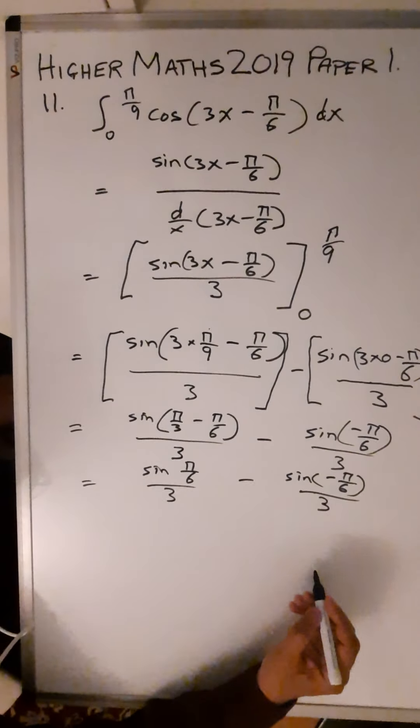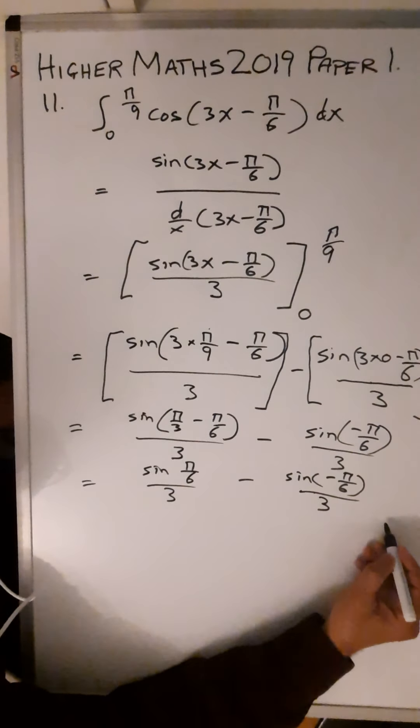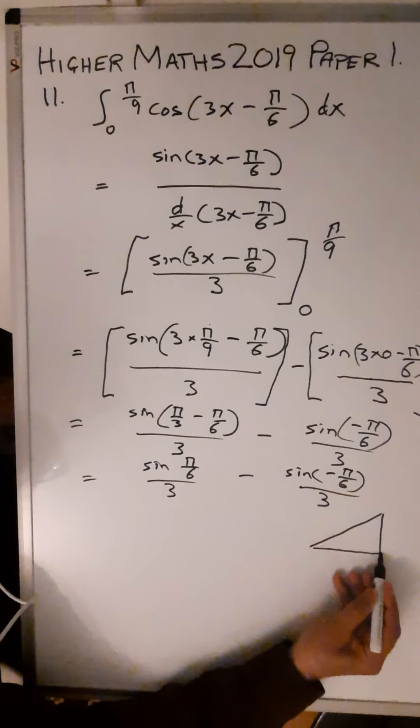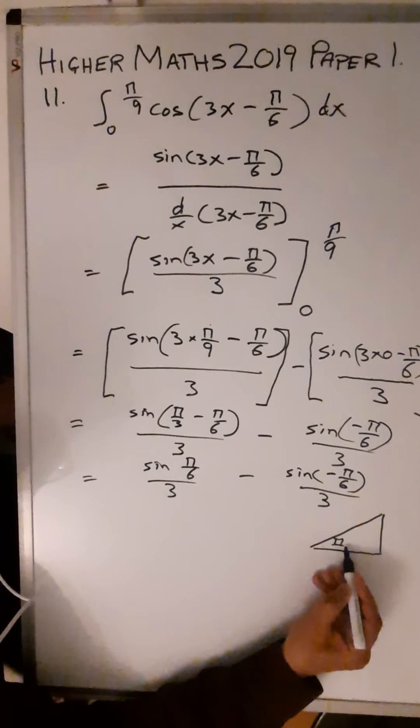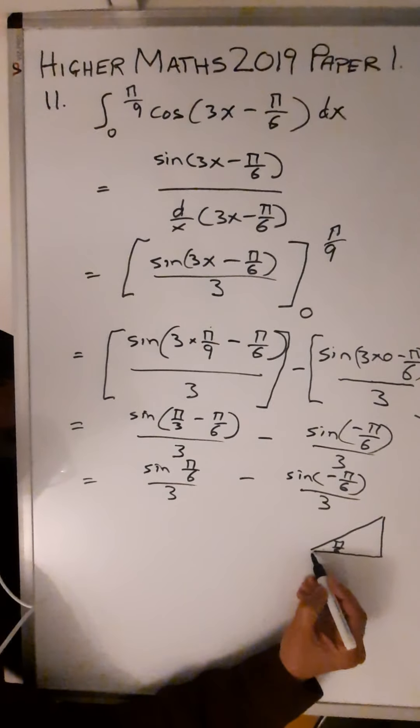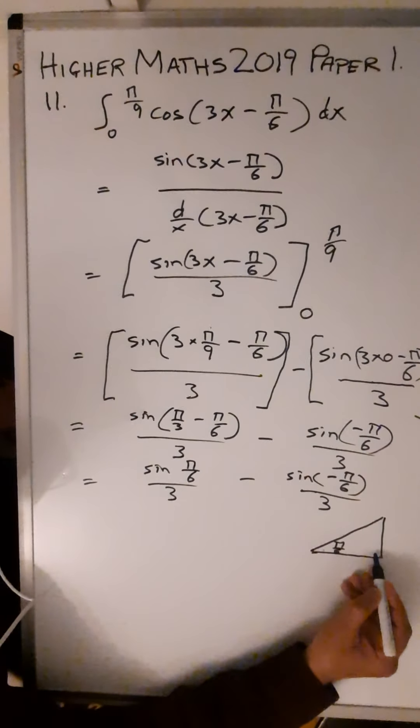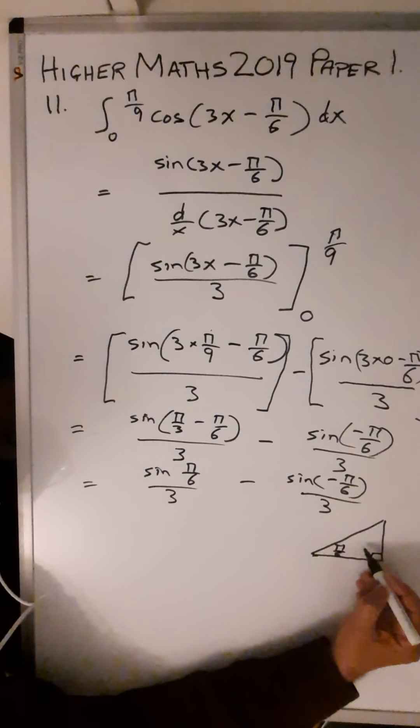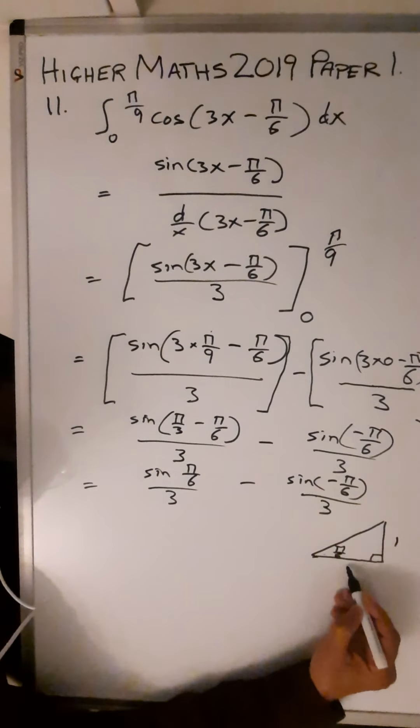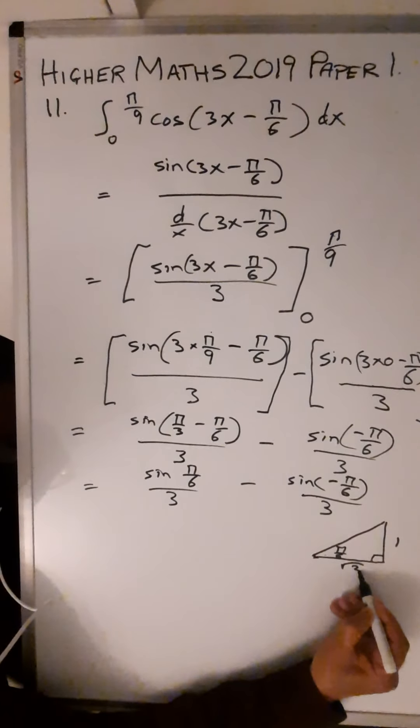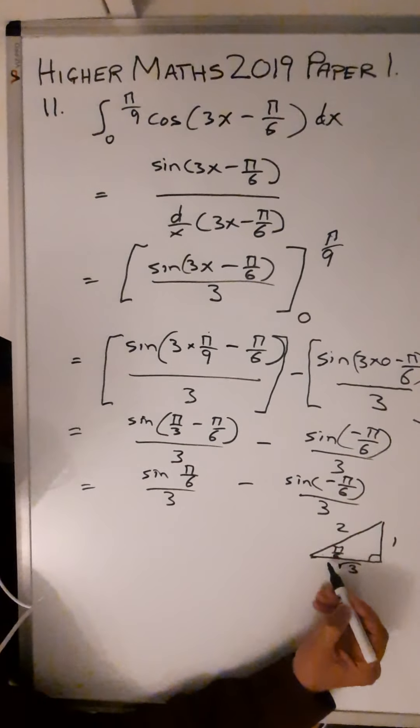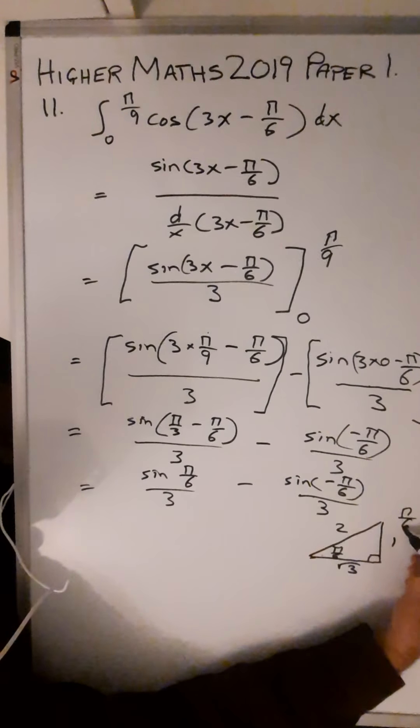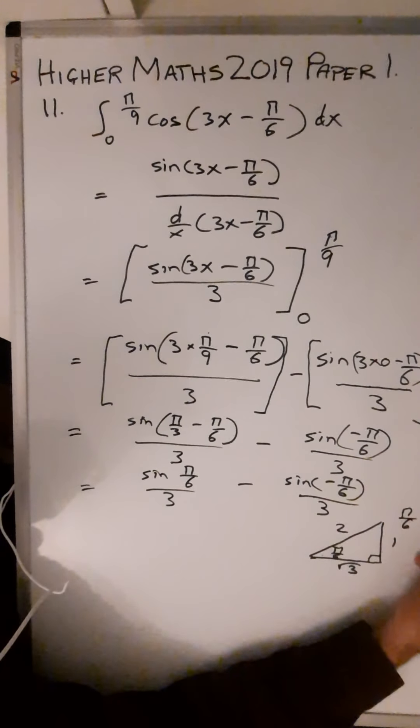You need your 30° π/6 triangle here. π/6 is the same as 30°. Right angle triangle with your exact values: opposite 30° is 1, adjacent is √3, and the hypotenuse is 2. So π/6 equals 30°.